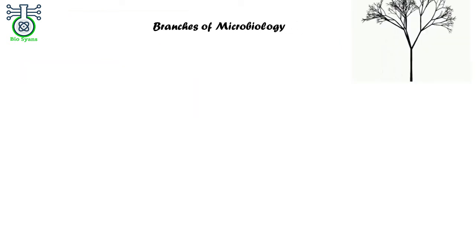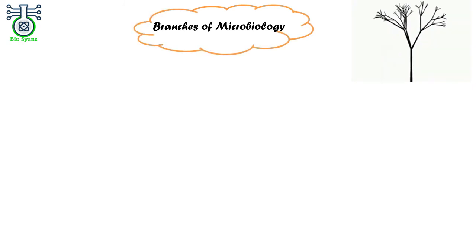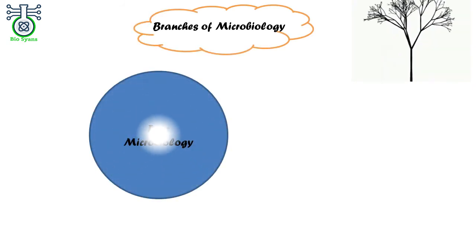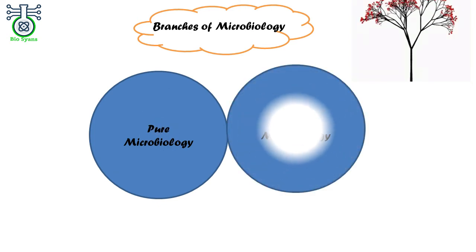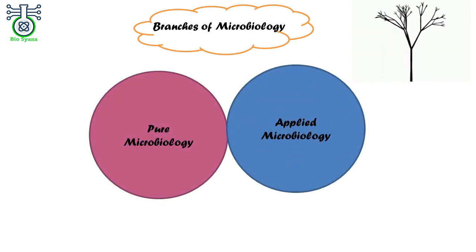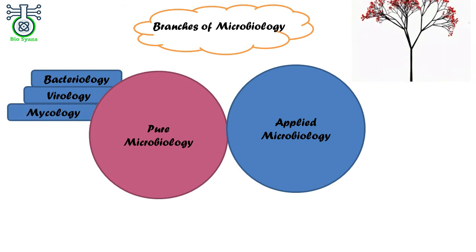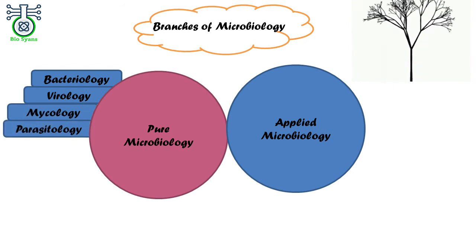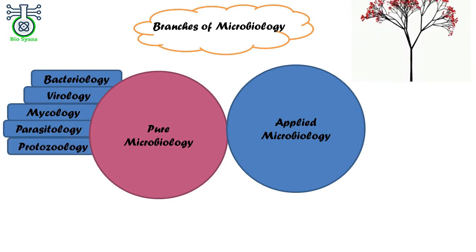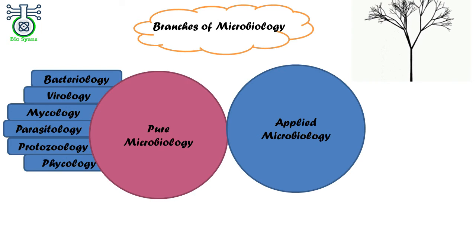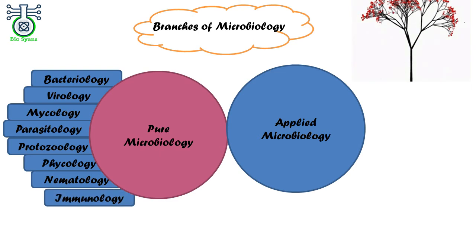Now let's talk about the branches of microbiology, which include the study of microbes and how microbes can be applied in different industries. They are divided into two types: pure microbiology and applied microbiology. Pure microbiology consists of bacteriology (study of bacteria), virology (study of viruses), mycology (study of fungi), parasitology (study of parasites), protozoology (study of protozoans), phycology (study of algae), nematology (study of nematodes), and immunology (study of the immune system).